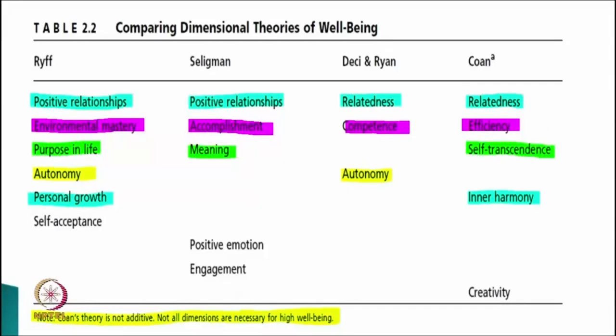However, he said that we may have a high score on some factors and a low score on others, and there is no need to combine all five factors' scores into a total. This is important because in Carroll-Riff's model, Seligman's model, and Deci-Ryan's model, we sometimes have an additive score and say 'total well-being score.' Comparing all these models, some factors are quite common and definitions are also connected, while other factors are quite unique.